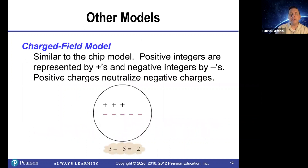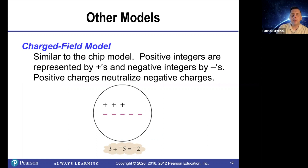Some other models. For example, the charged field model is similar to the chip model. Positive integers are represented by pluses and negative integers by minuses. Positive charges neutralize negative charges. Here's an illustration of three plus negative five equals negative two.